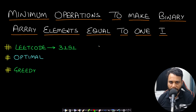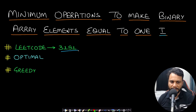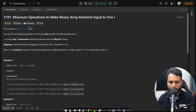Hello guys, welcome back to TechDos. In this video we will look at the 'Minimum Operations to Make Binary Array Elements Equal to One' problem, which is LeetCode number 3191. Let's now read the problem statement.